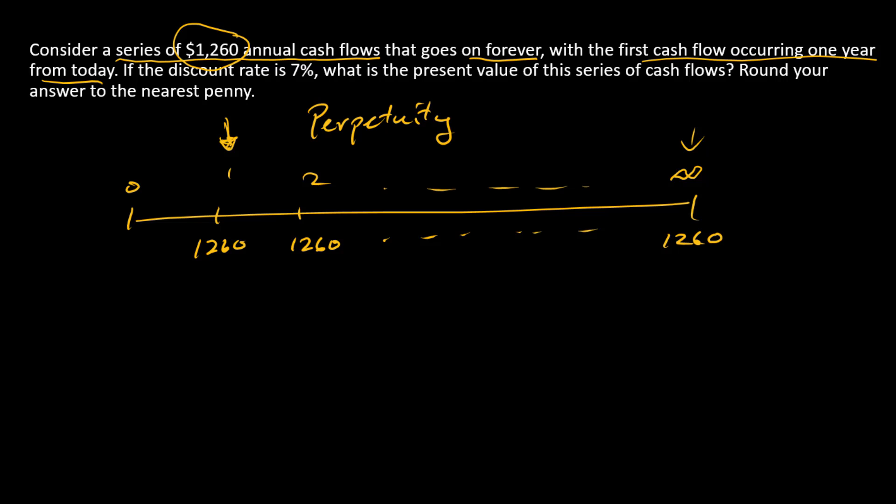So what do we ask for? We're asked for the present value. We're asked for today's cash equivalent, the amount we would swap today for this series of cash flows. That's the present value of the perpetuity.